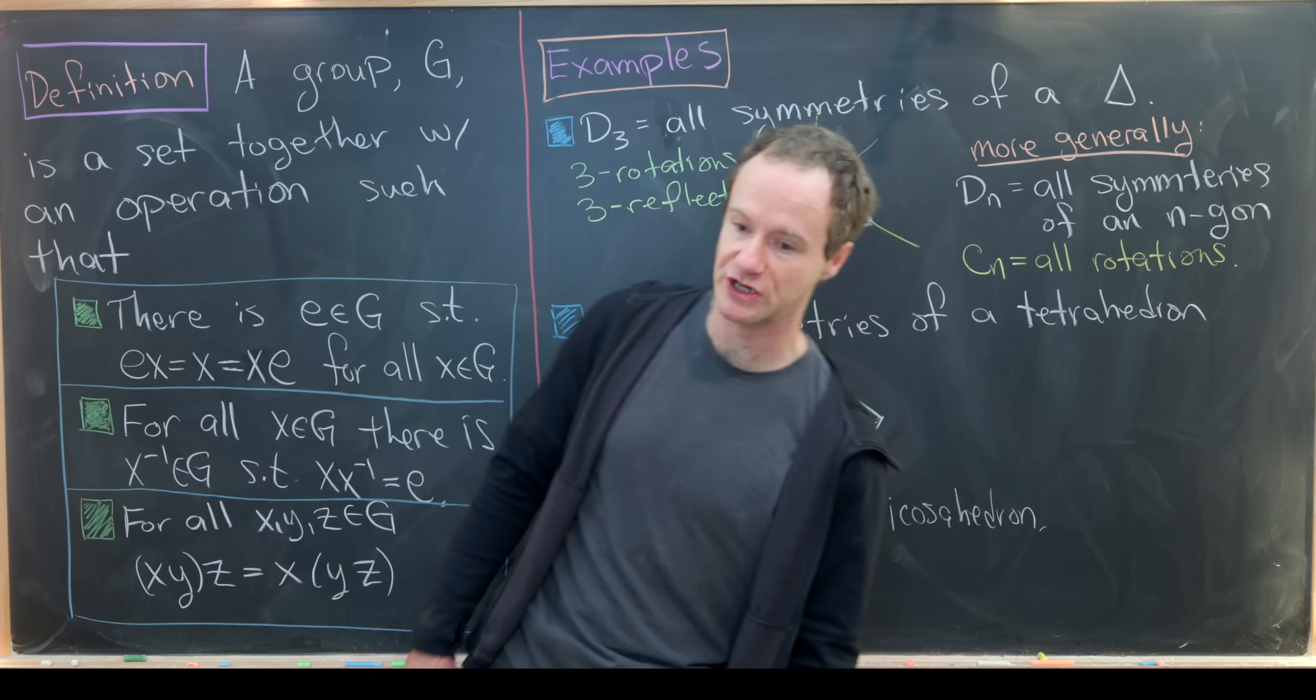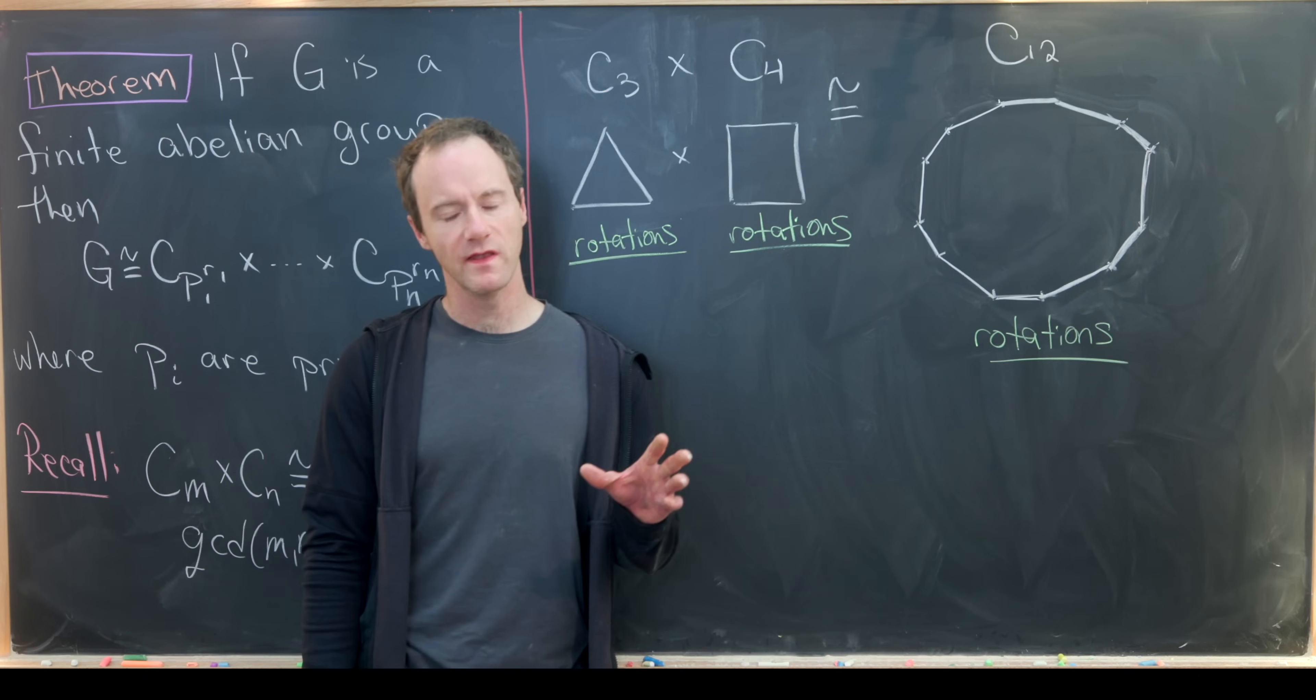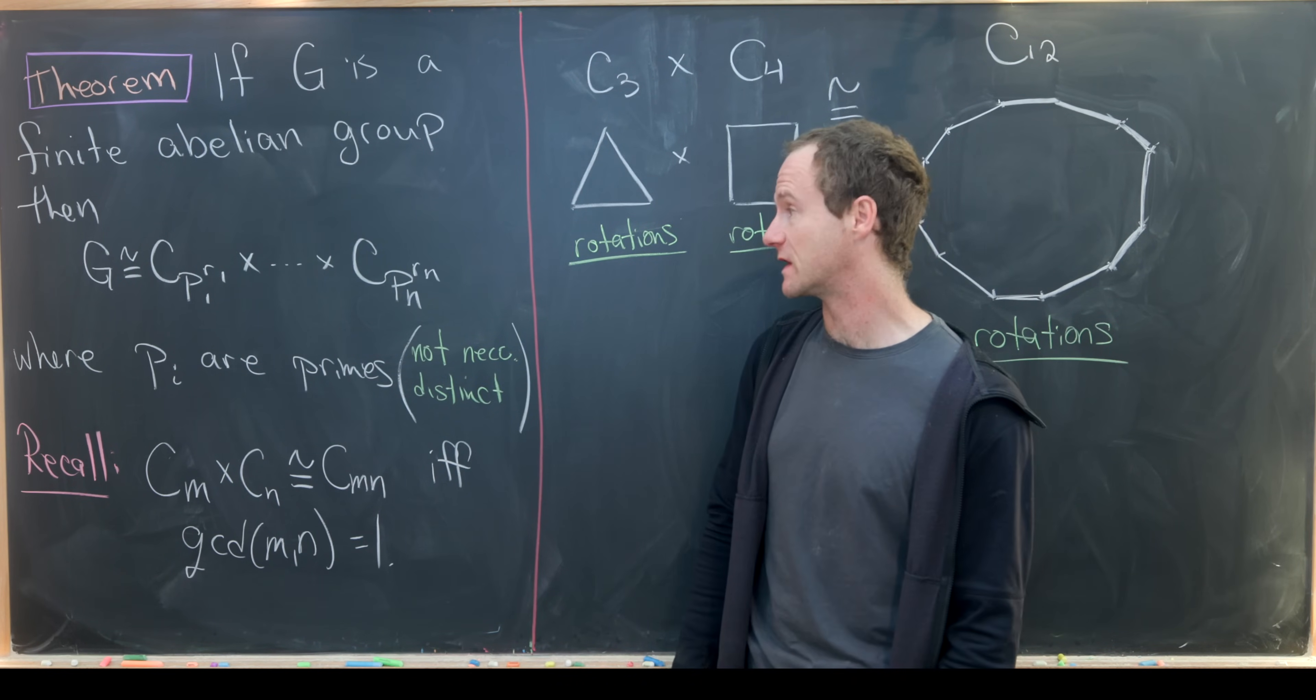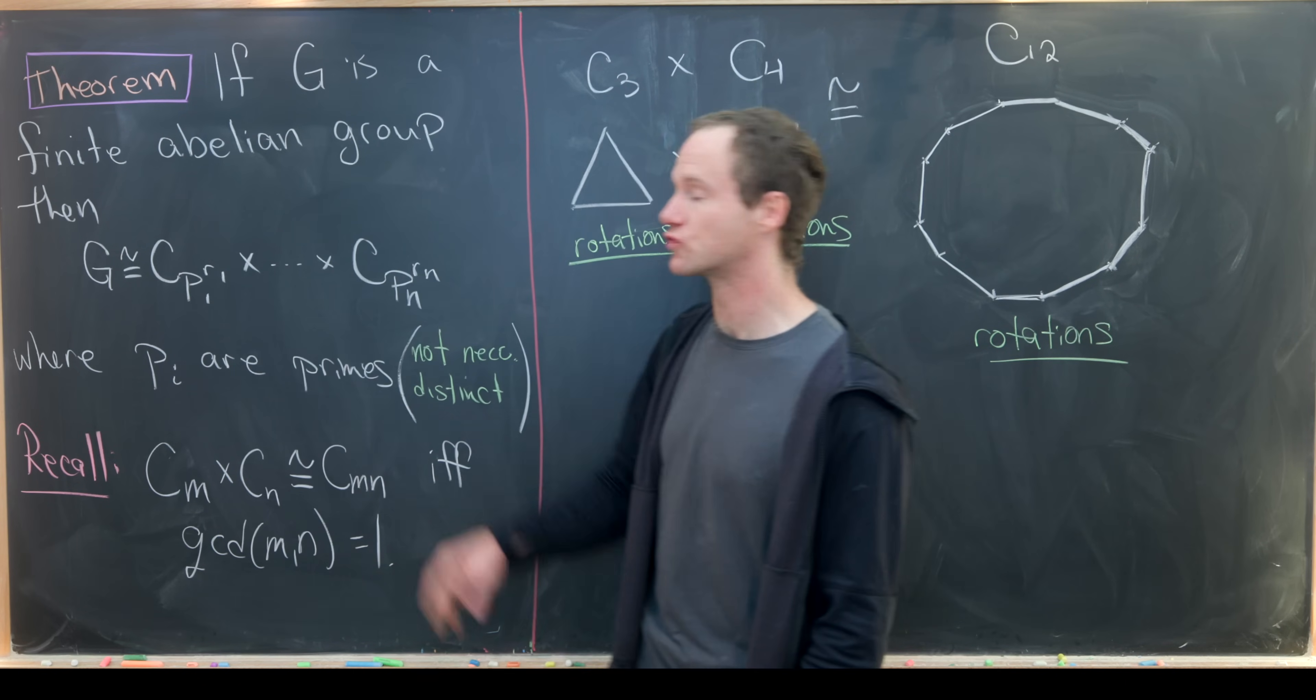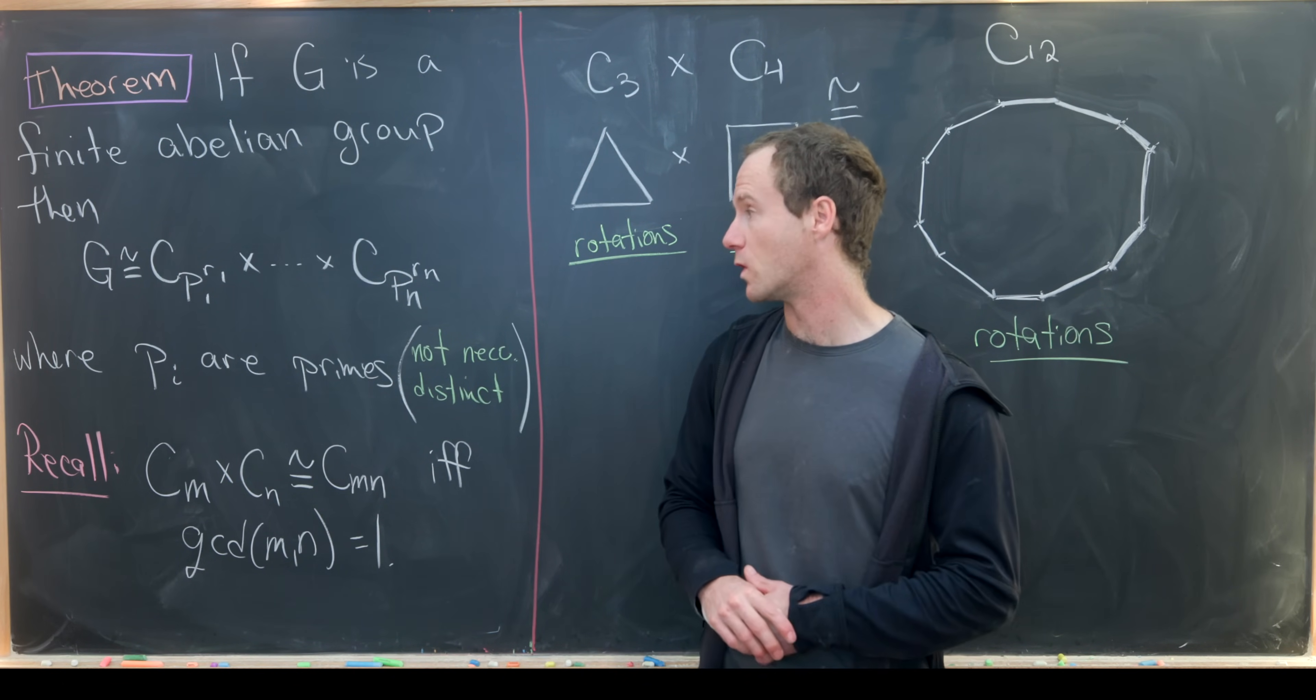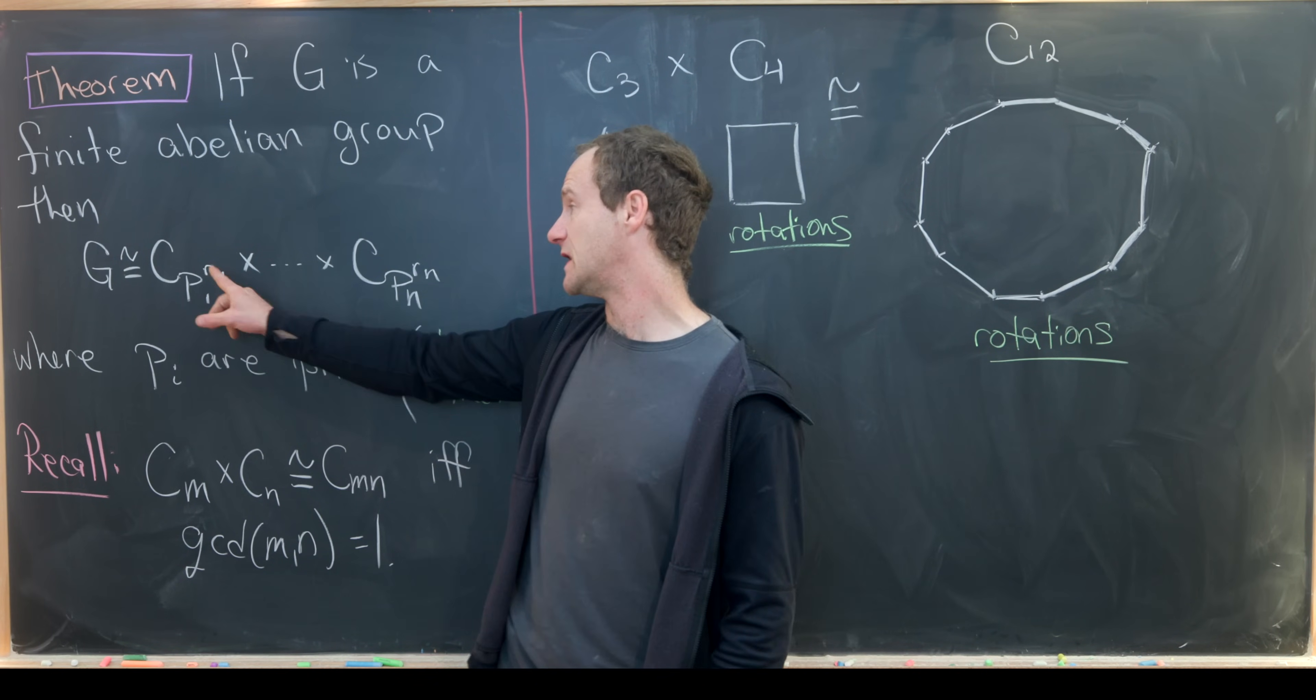Now that we have reviewed groups and looked at examples, let's explore groups of order 30 million. We've got one last thing to recall first: the fundamental theorem of finite abelian groups. It says that any finite abelian group is isomorphic to a direct product of cyclic groups. We've got C P1 to the R1, where P1 is prime, all the way up to Pn to the Rn.